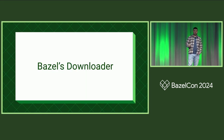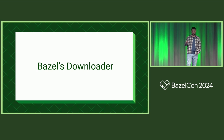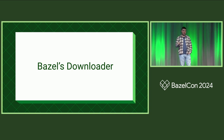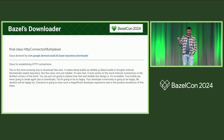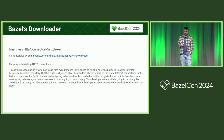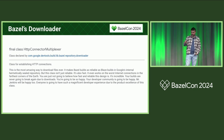Next, let's talk about the Bazel downloader. I think it's an amazing piece of technology. Bazel actually wrote in their own documentation that this is the most amazing way to download files ever — it makes Bazel builds as reliable as Blaze builds in Google's internal hermetically sealed repository. It's not just reliable, it's also fast. So your developer community is going to be happy, and your CI system will be happy too — everyone will have a magnificent developer experience.